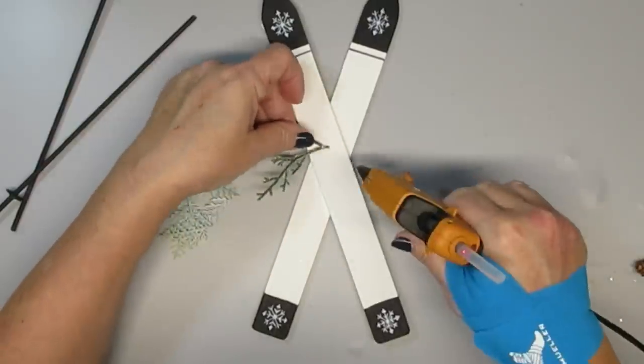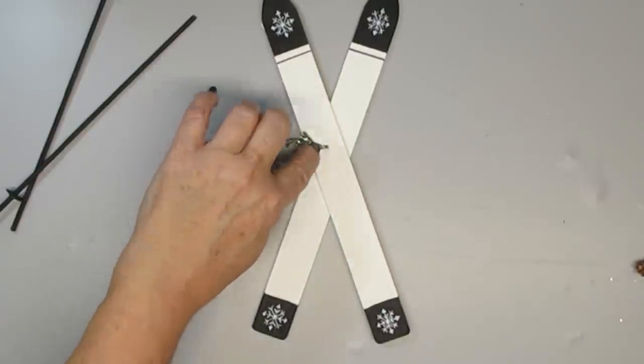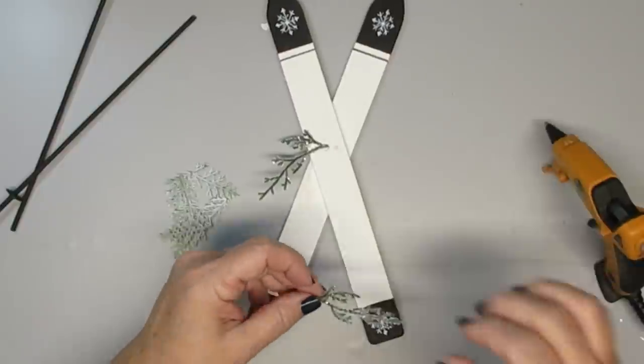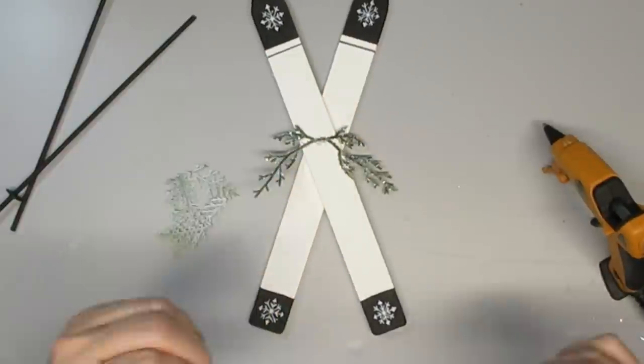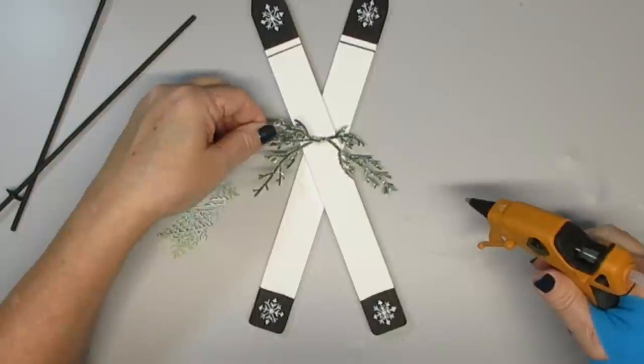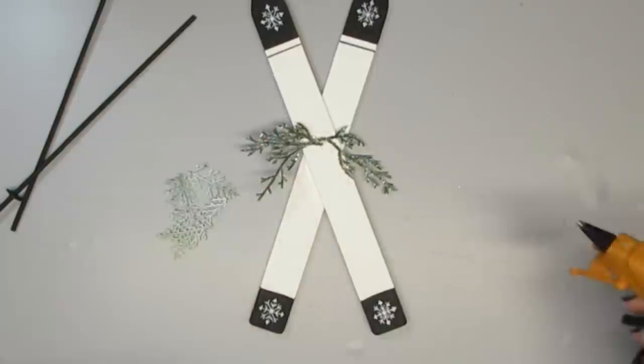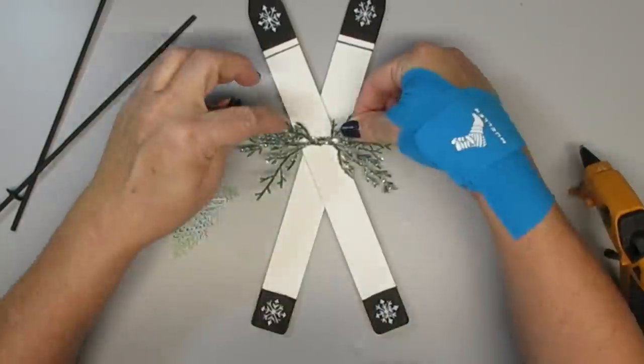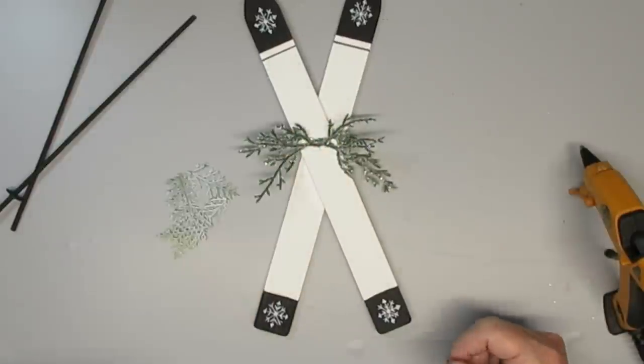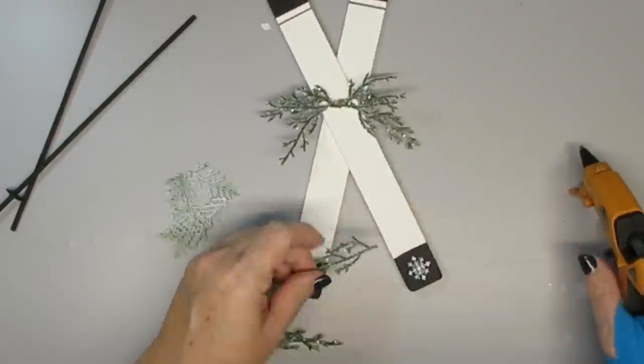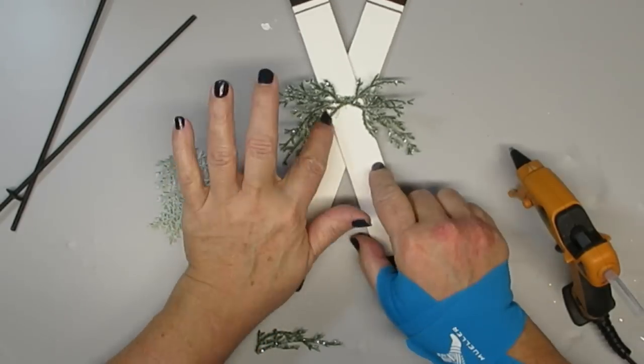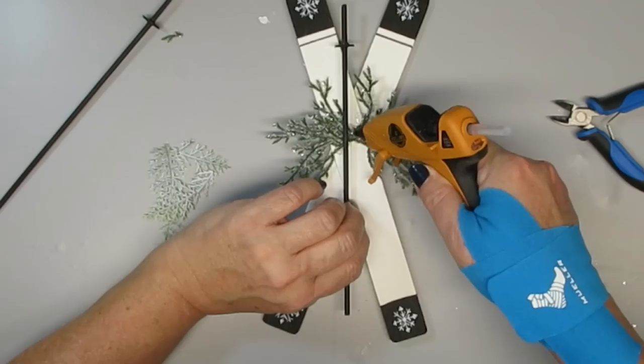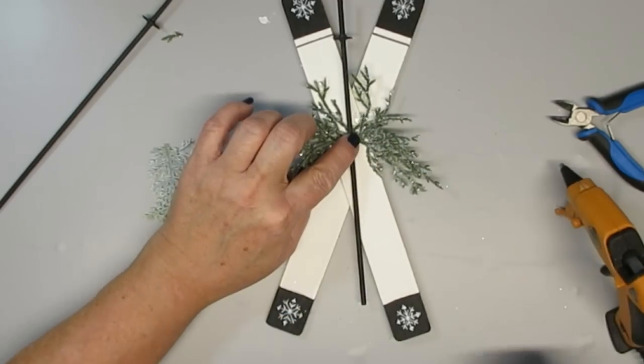Now it's time to add some greenery and some pine cones. I've got some frosted greenery here. That was also from Michael's. I've also got some cedar branches that I have from Amazon and I spray painted them a little bit white so they have more of a snow look to them. I'm going to add these all together and then I'm going to be putting on my ski poles. And on top of that, I'll be adding a little bit more greenery and a couple of sweet little pine cones.